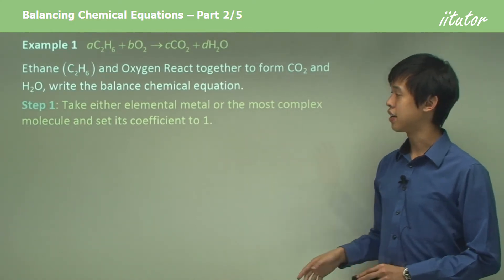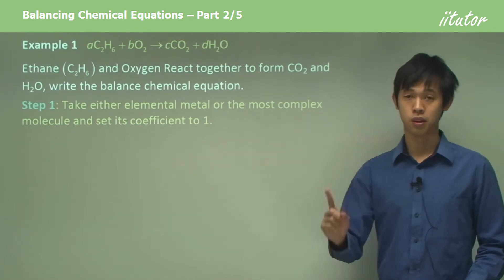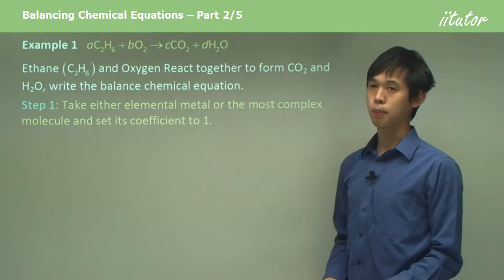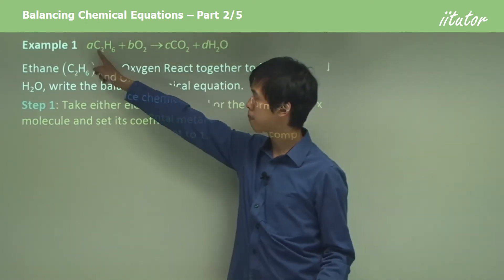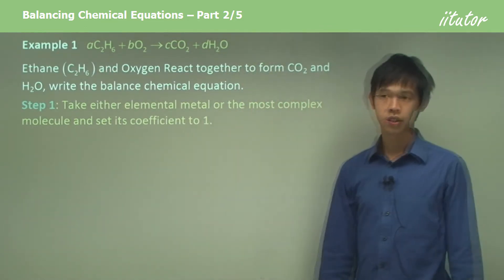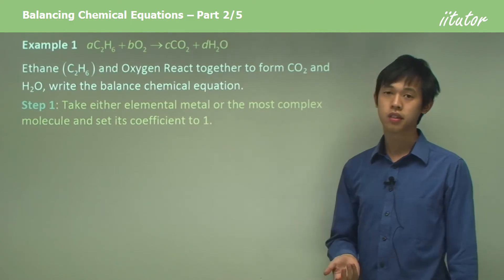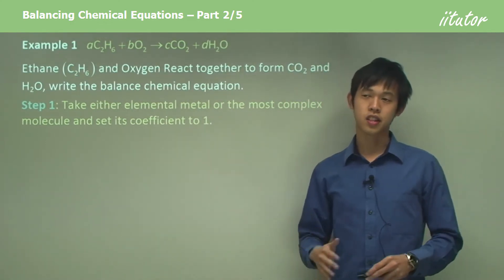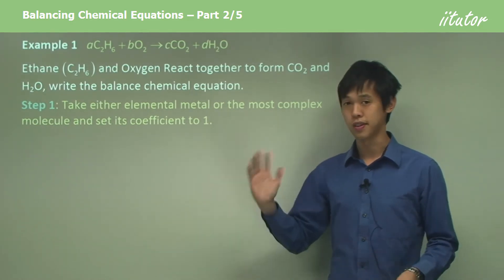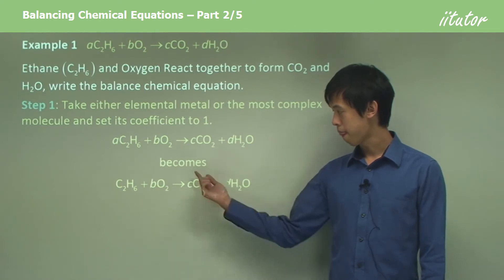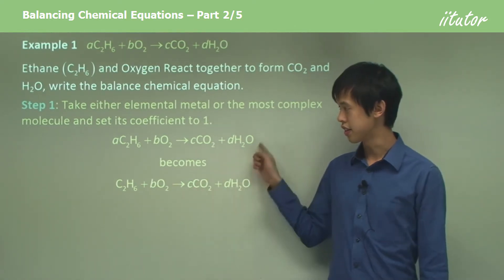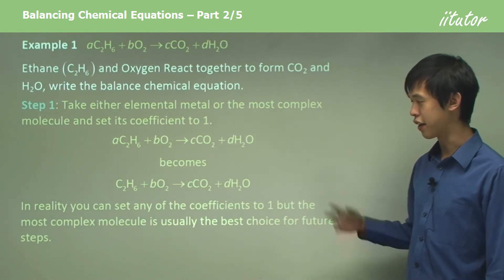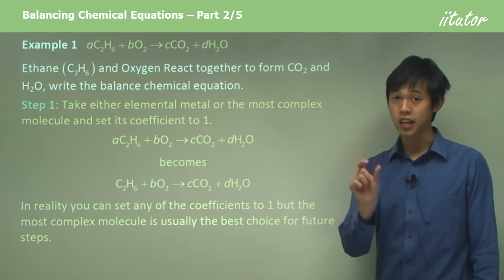So what you do is you set the most complex molecule, set the coefficient of that molecule to one. So if there's no elemental metals then look for the most complex molecule. If you look at this, which one do you think is the most complex? Well I think this one is. So I put A equals 1. Now the choice here is arbitrary. Whatever you do, it doesn't matter. I could set C to be 1, D to be 1, B to be 1, it doesn't matter. The only difference is that it may give you more work later on. So that's why I decided to show you this method. Here's our equation and it becomes this because A equals 1. This equation goes to this one. You can see A has become 1, so we just ignore it. We don't leave it there. Like I said you can turn any of them to 1, but the most complex molecule or the elemental metal is usually the best choice.